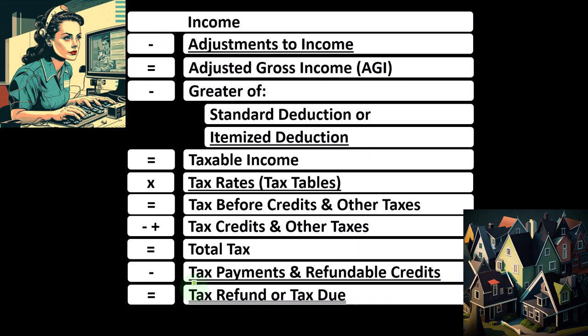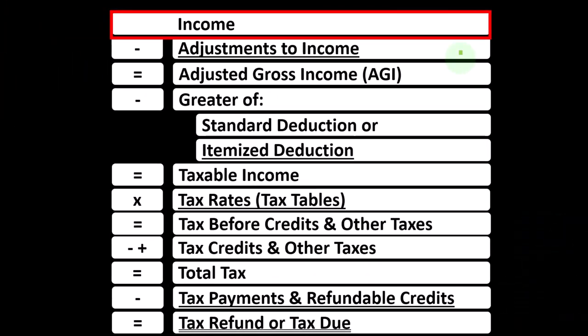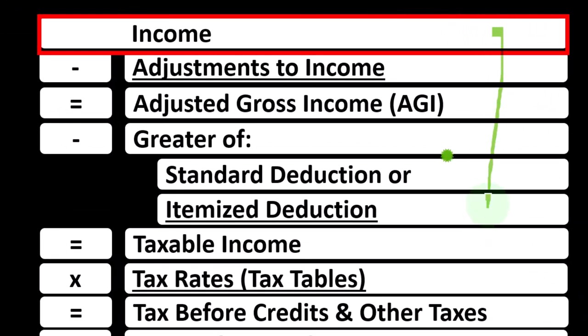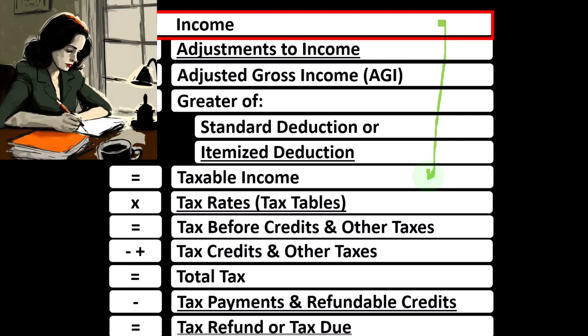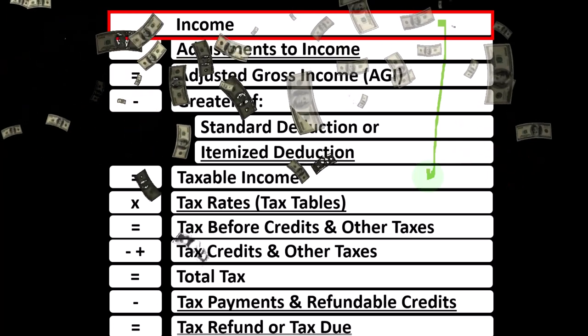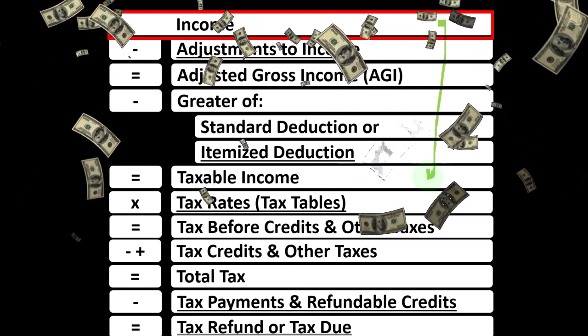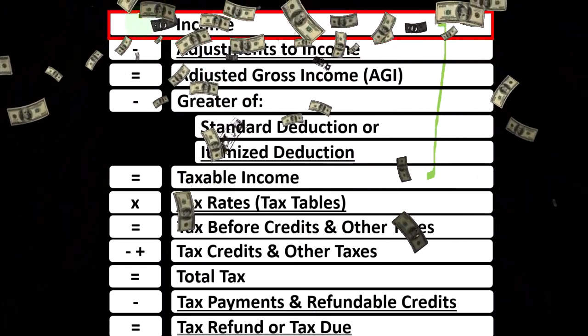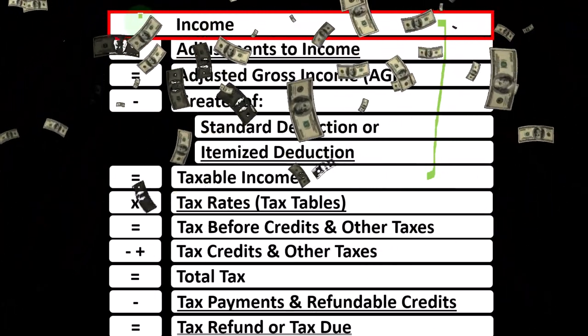Looking at the income tax formula, we're focused on Line 1, Income. Remember, the first half of the income tax formula is, in essence, an income statement — just an outline, with other forms and schedules flowing into these line items. One of those is the Schedule E, which is, in essence, an income statement in and of itself with rental income minus rental expenses.